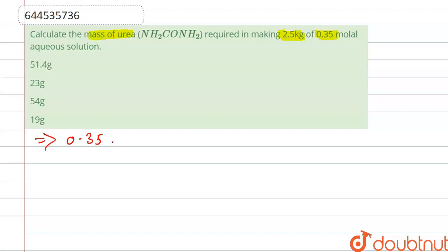0.35 mole of urea are present in 1 kg of water.